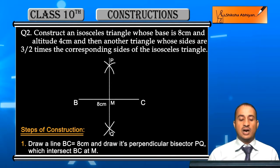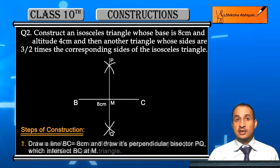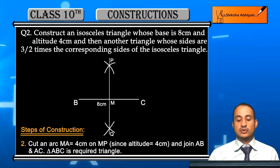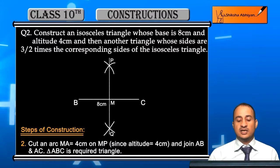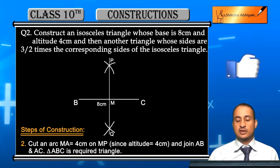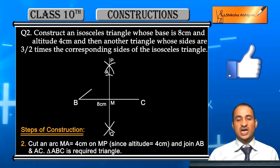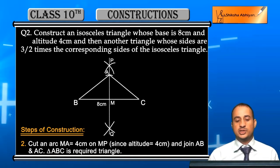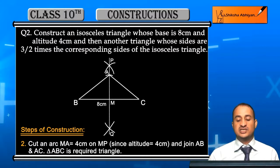Now cut an arc of MA equal to 4 centimeters on line PQ — since the altitude is 4 centimeters, we cut the arc on PQ at point A. Then join AB and AC. Triangle ABC is now the required isosceles triangle.